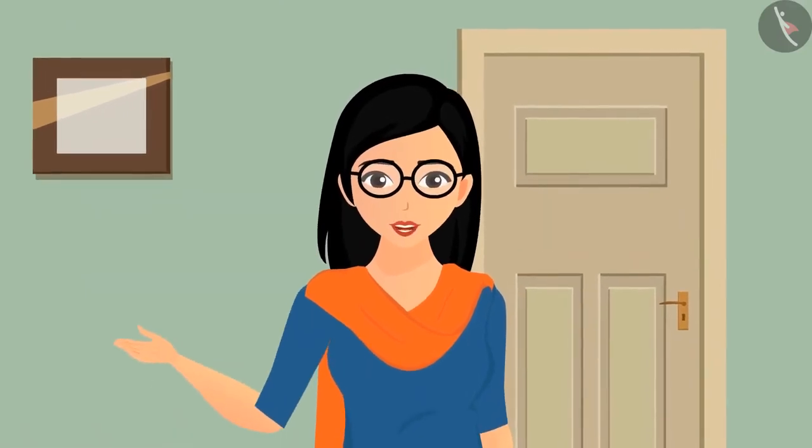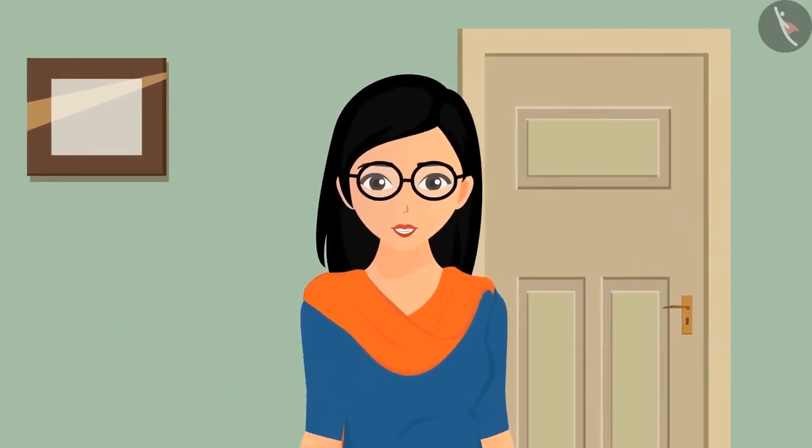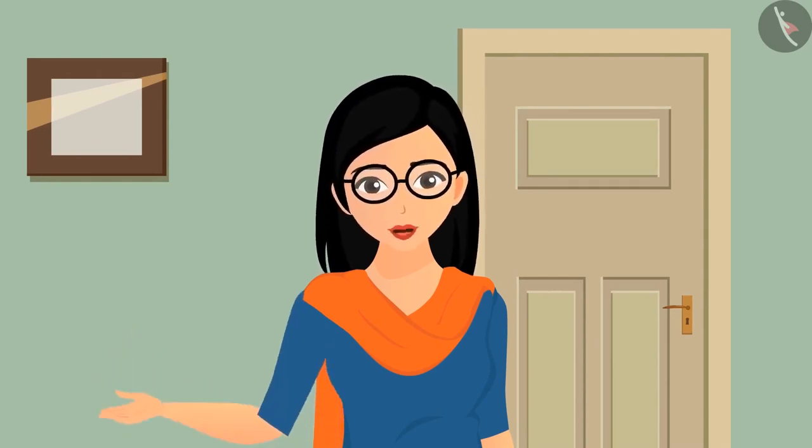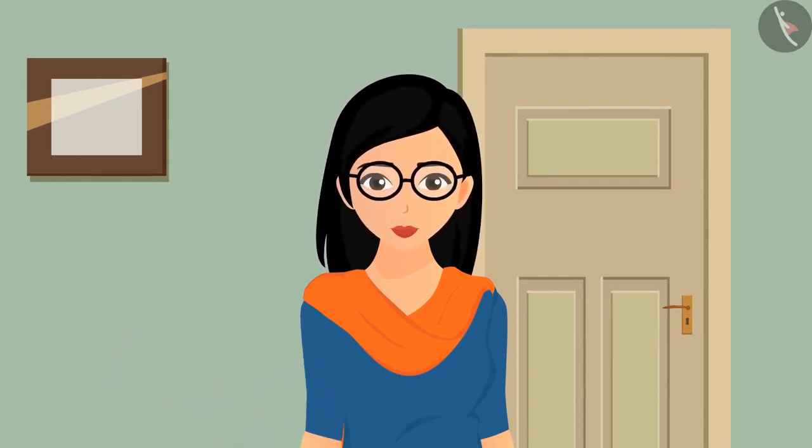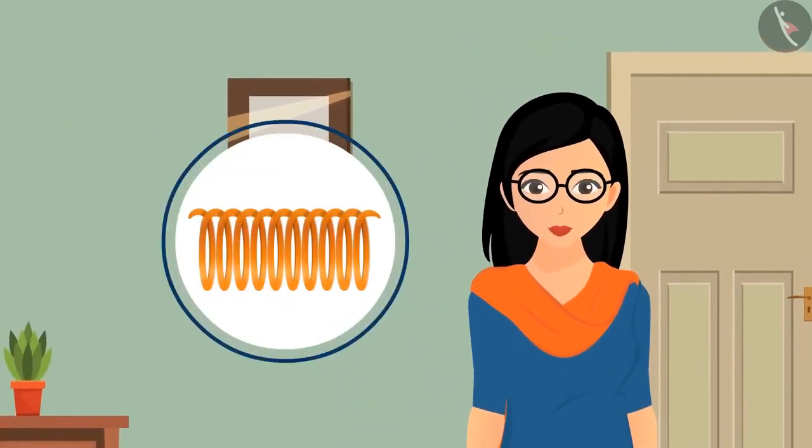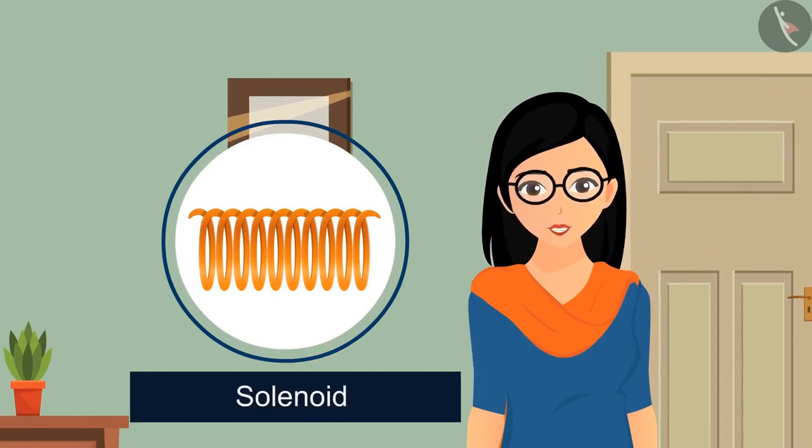You must be thinking what was the reason behind understanding the circular loop. You will get to know the reason by the end of this video. What will happen if you take a number of loops and make a coil out of it in place of a single loop? This coil, in terms of science, is known as solenoid.